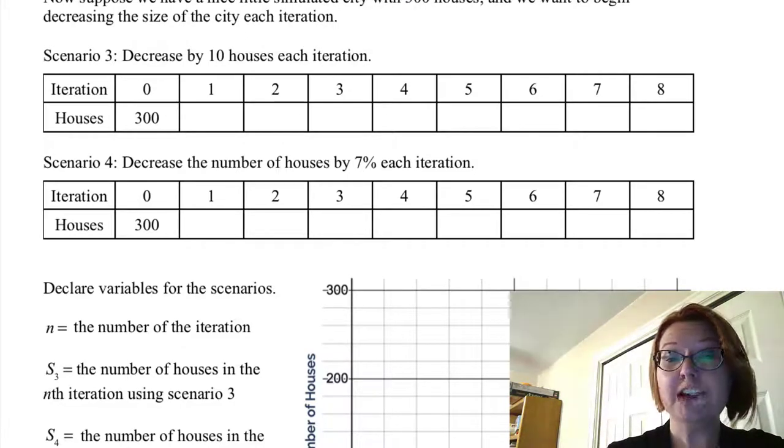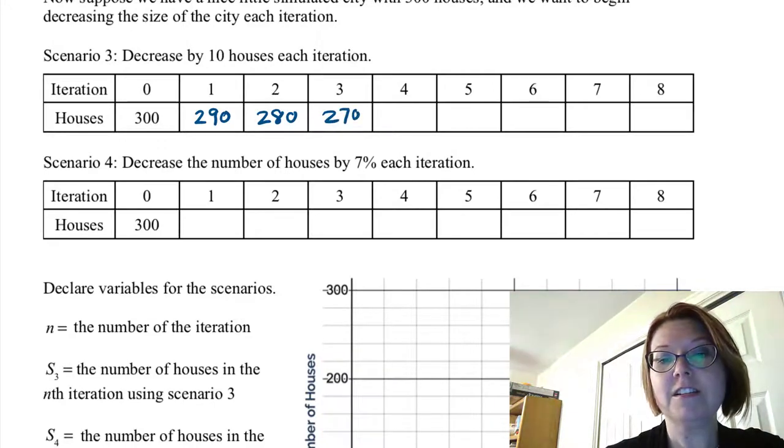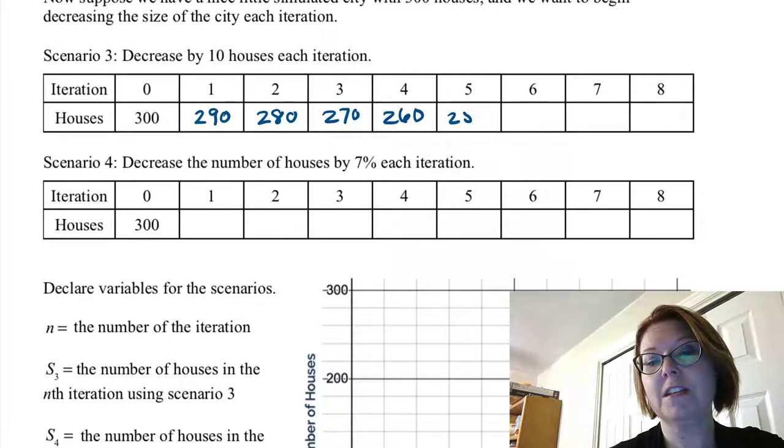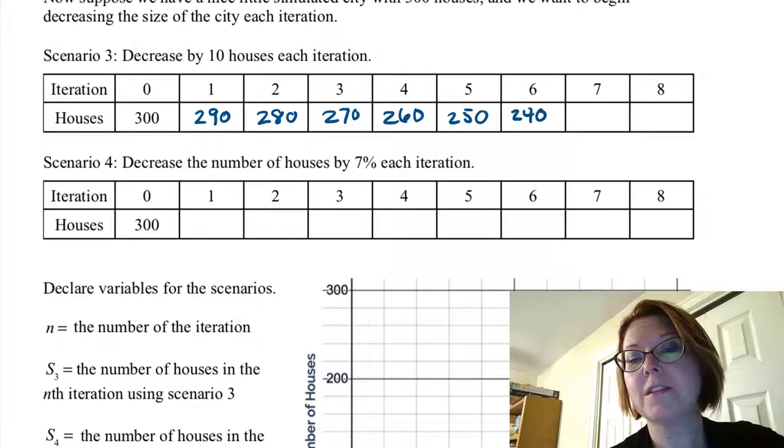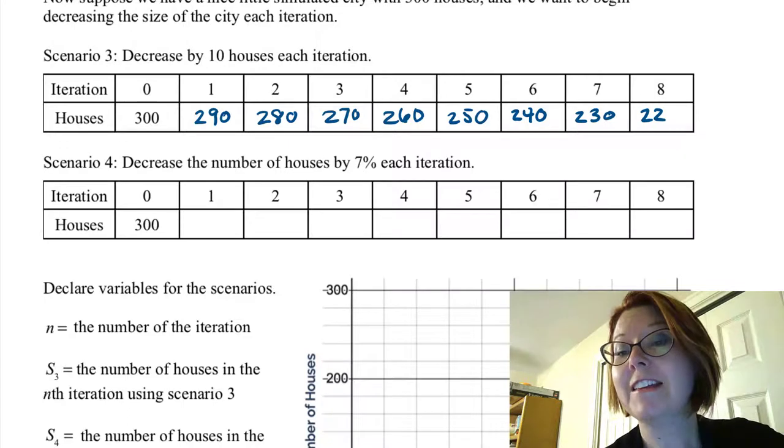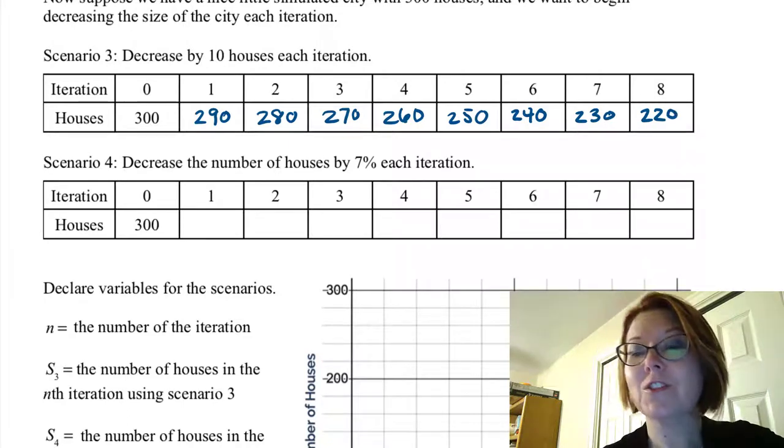If we start with 300 and we decrease as we move from zero to eight iterations, the first iteration we would have 290 houses, the second iteration 280 houses, then 270, 260, 250. At six iterations we would have 240 houses, at seven iterations 230, and finally at eight iterations 220 houses.